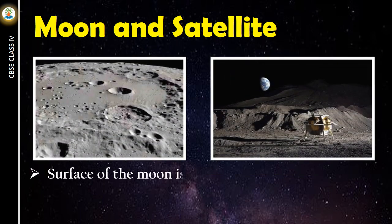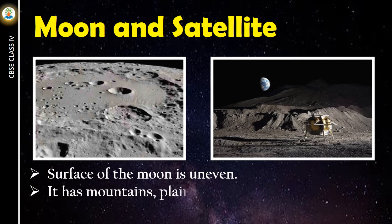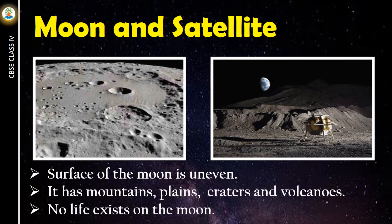Surface of the moon is uneven. It has mountains, plains, craters and volcanoes. No life exists on the moon.